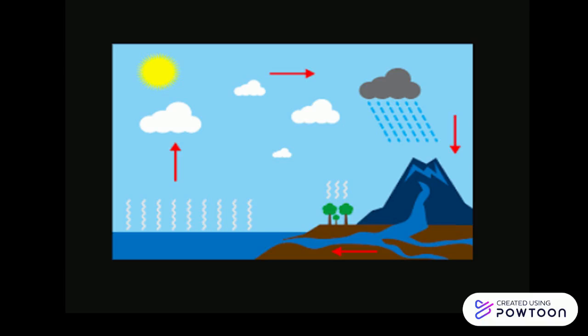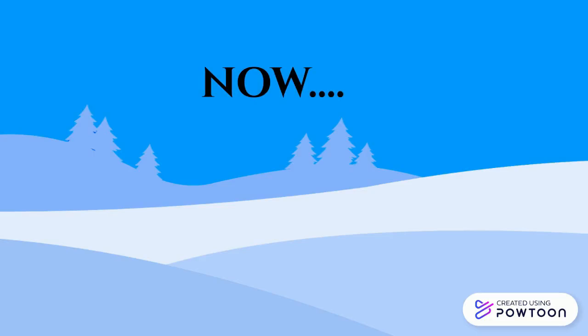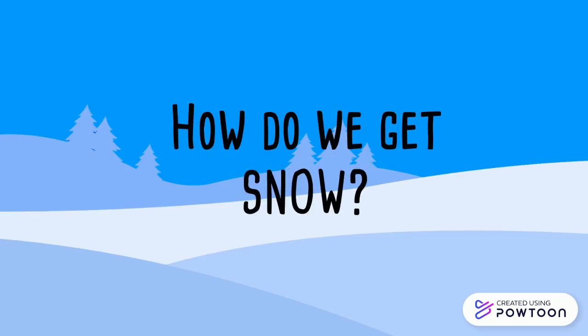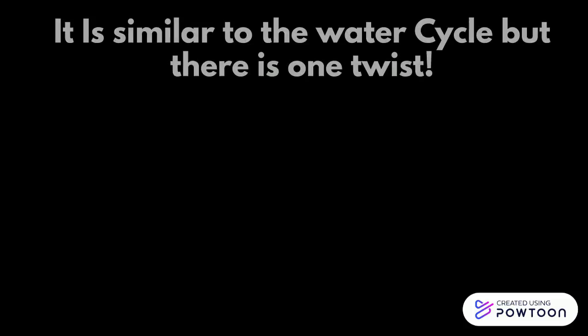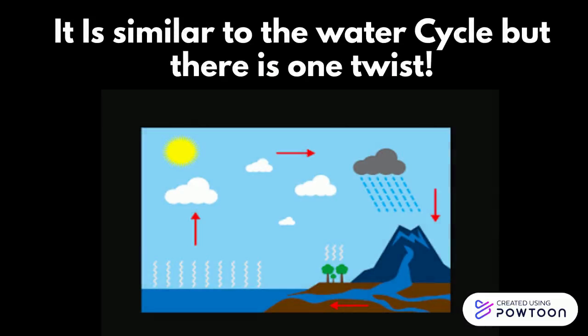This is a diagram or an example of the water cycle. Now you might be wondering, how do we get snow? Well, it's similar to the water cycle, but there's one twist.